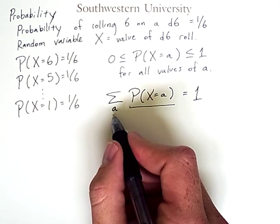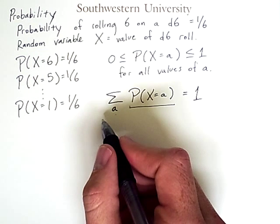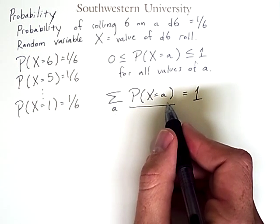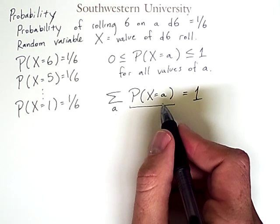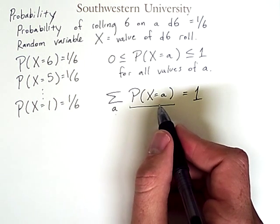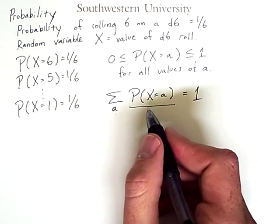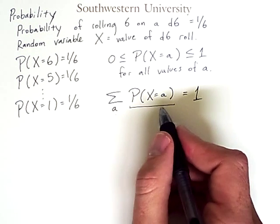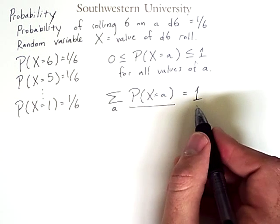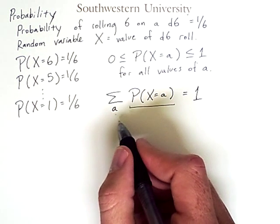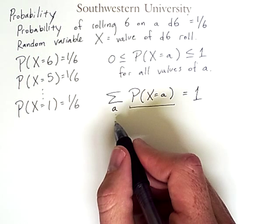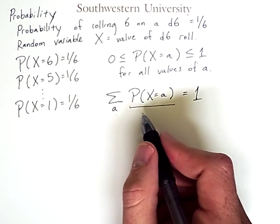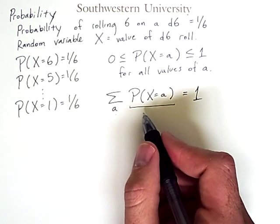Now, if a were 0, we could still ask, what is the probability that X will equal 0? Well, that probability is 0 because 0 is not on the die. Likewise, the probability that X equals 35 is also 0. So, this will happen to come out to 1 even if we put in values for a that can't come out on the die because only the real die values will have non-zero probabilities.